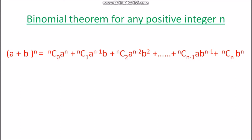For any positive integral index n, the binomial theorem states: (a + b)^n = nC0·a^n + nC1·a^(n−1)·b + nC2·a^(n−2)·b^2 + ... + nCn·b^n. The coefficients nC0, nC1, nC2, ..., nCn are called the binomial coefficients.